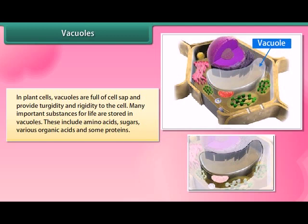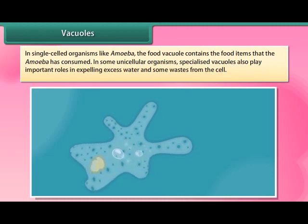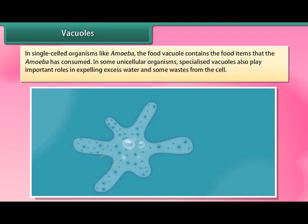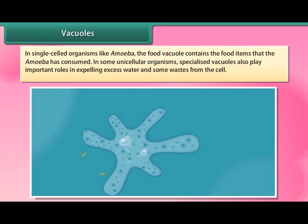Many important substances for life are stored in vacuoles, including amino acids, sugars, various organic acids, and some proteins. In single-celled organisms like amoeba, the food vacuole contains the food items that the amoeba has consumed. In some unicellular organisms, specialized vacuoles also play important roles in expelling excess water and some wastes from the cell.